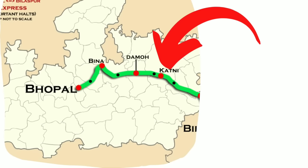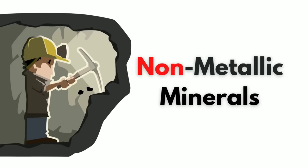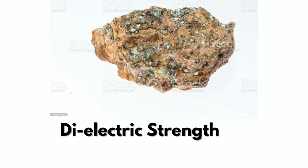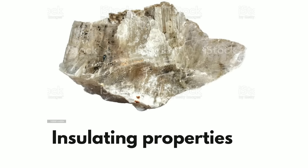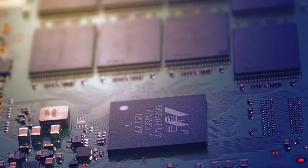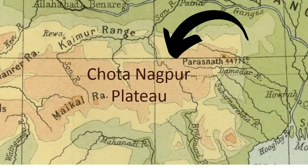Now let's talk about the second division of minerals — non-metallic mineral. The most important example is mica. Mica has amazing qualities like dielectric strength, low power loss factor, insulating property, and resistance to high voltage. This is the most indispensable mineral in the electrical and electronic industry. An important deposit is found in the Chota Nagpur Plateau.